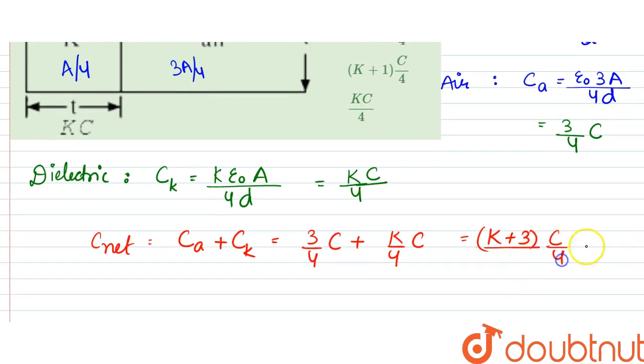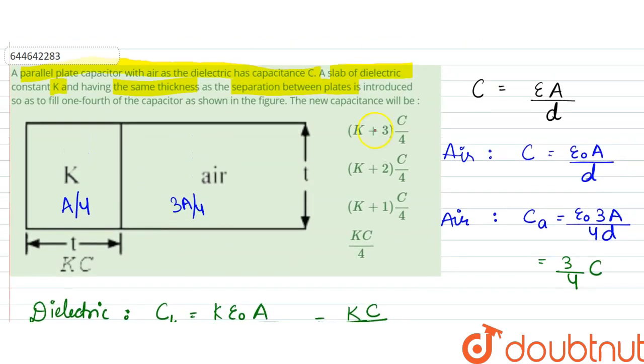Our answer would be, or we can write like this, C by four times K plus three, which is C by four times (K plus 3). So option A is our answer. Thank you.